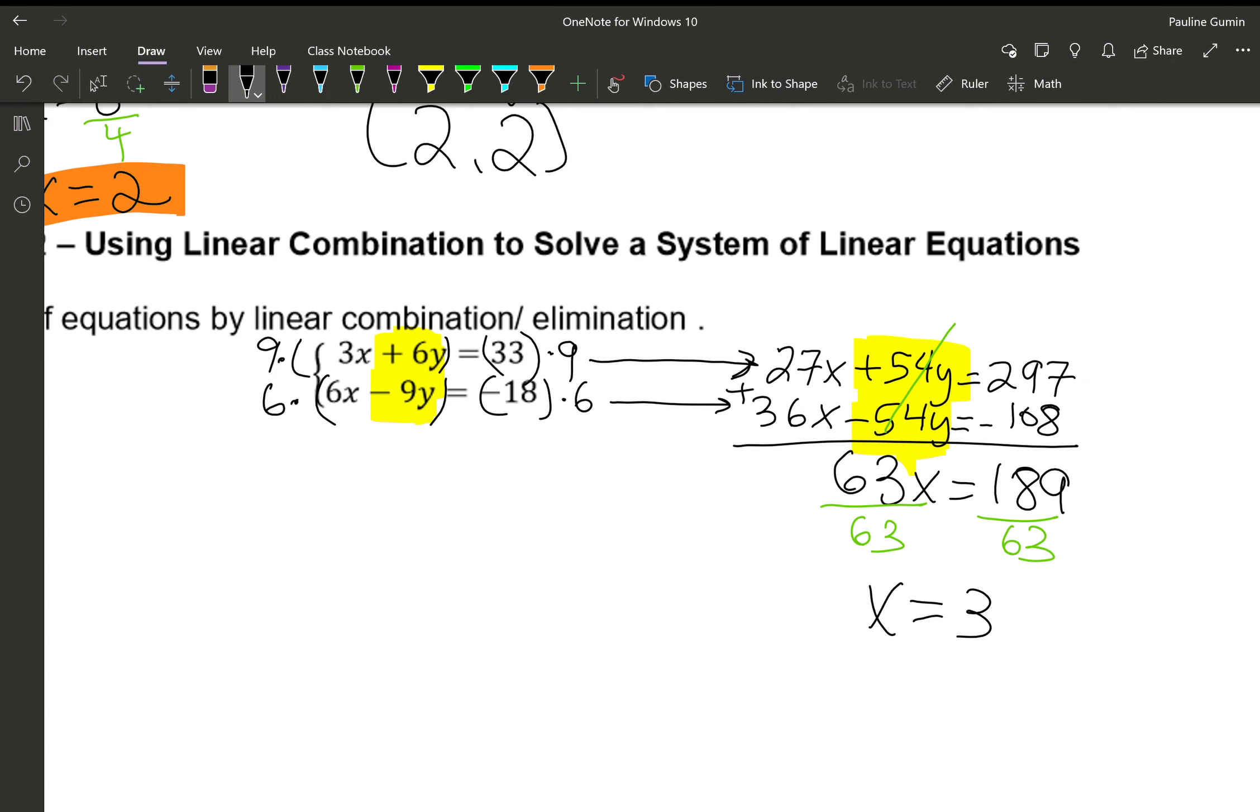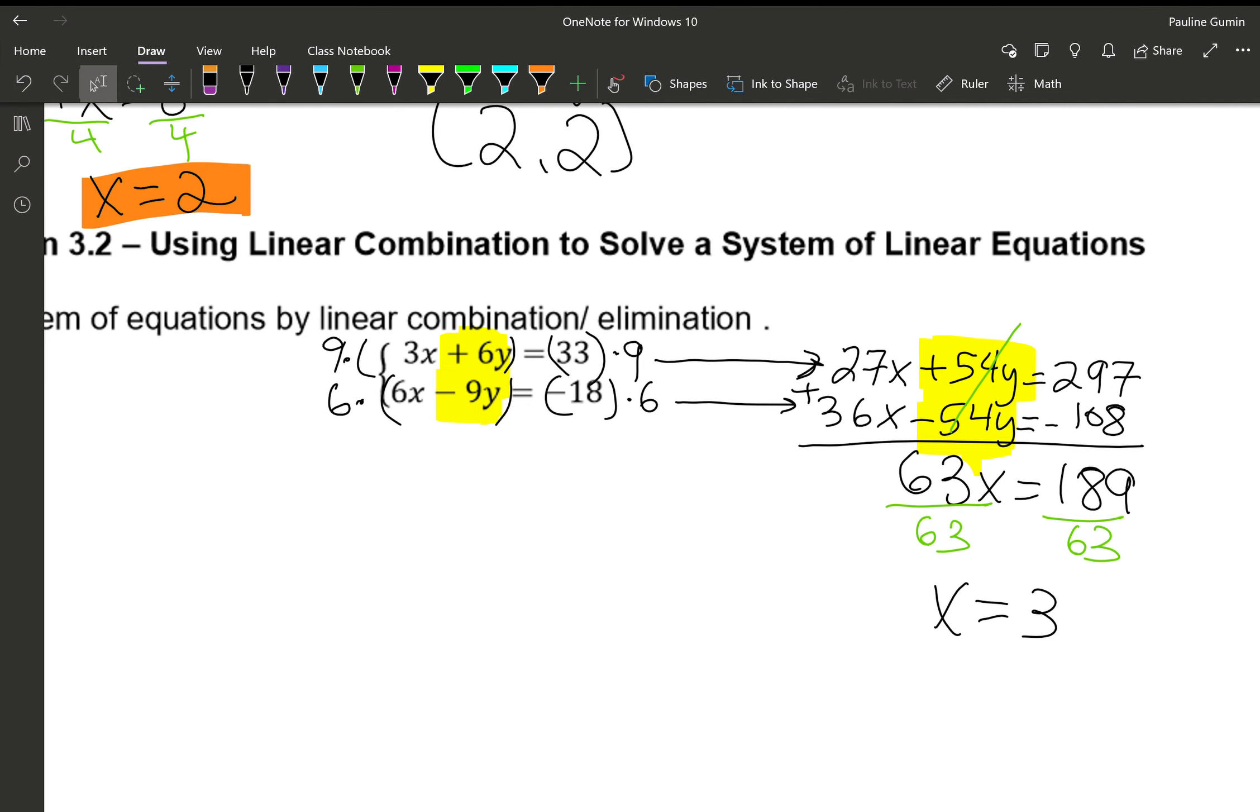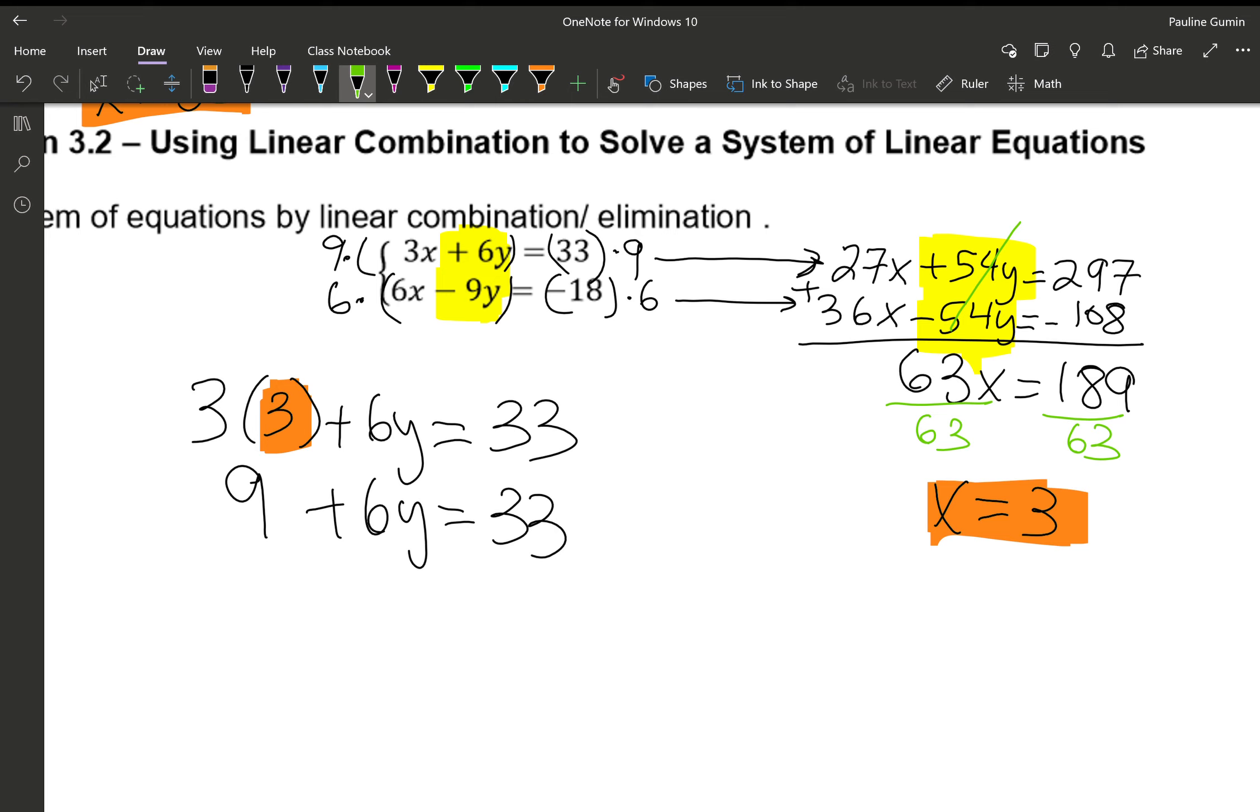Now that you found that X equals 3, it does not matter which equation, as long as we use an original one, we use to solve for Y. I feel like using the top equation. I encourage you to try a different one. Instead of 3X plus 6Y, I'm going to have 3 times 3 plus 6Y equals 33 because I found what X is. 3 times 3 is 9. What do you think we should do next? Let's subtract 9 from both sides. 6Y equals 24. And what do we do to finish? Divide by 6. Y equals 4. So our final answer, 3 comma 4, X comma Y.